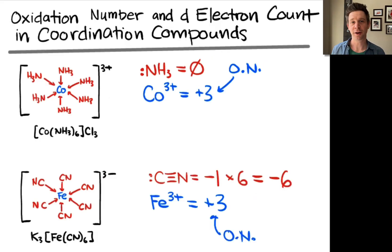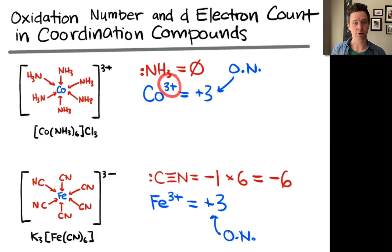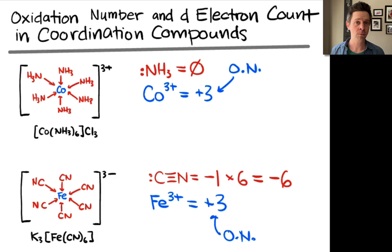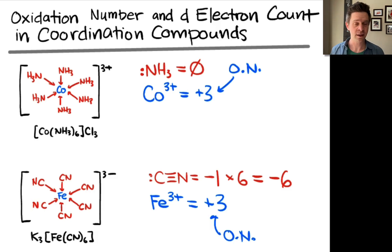Now let's talk about how we determine the number of d electrons at the metal center, now that we have the oxidation number. The number of d electrons is the number of valence electrons in the neutral transition metal atom minus the oxidation number. Cobalt, for example — if you look at the periodic table, cobalt is in group 9 and normally has 9 valence electrons when neutral. This means that in the plus 3 oxidation state, the number of d electrons at cobalt is equal to 6, since cobalt 3 plus has 3 fewer electrons than a neutral cobalt atom.